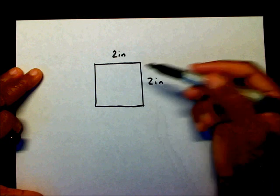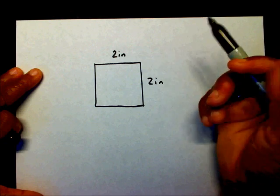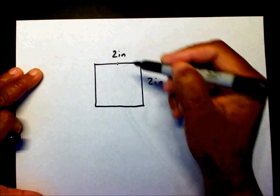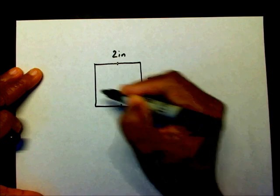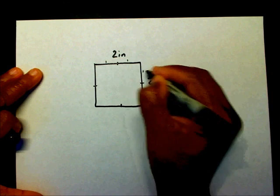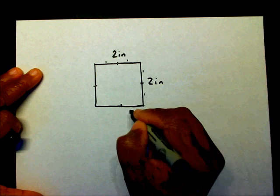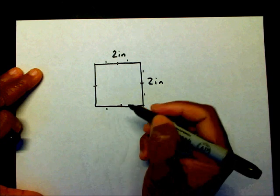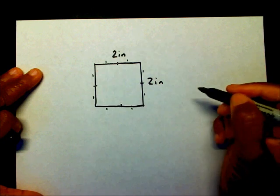I'm going to divide each side up into inches. So that means this is one inch, and this is an inch, this is one inch, and this is an inch, this is one inch, and this is one inch, and so forth over here.